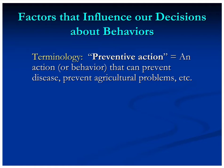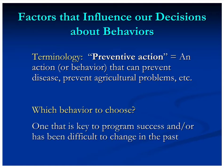In terms of which behavior to choose, we choose one that's key to program success or has been difficult to change in the past. We'll look at our KPC and see what behavior some people are practicing but is still quite low — say under 20 or 25% — and we'd like to scale it up. It should be something with a lot of impact, like exclusive breastfeeding, knowing that proper breastfeeding practices can avert about 13% of all child deaths. Also, if we see something we tried to change in the past with very little movement in that indicator, that's one we'd do barrier analysis around.